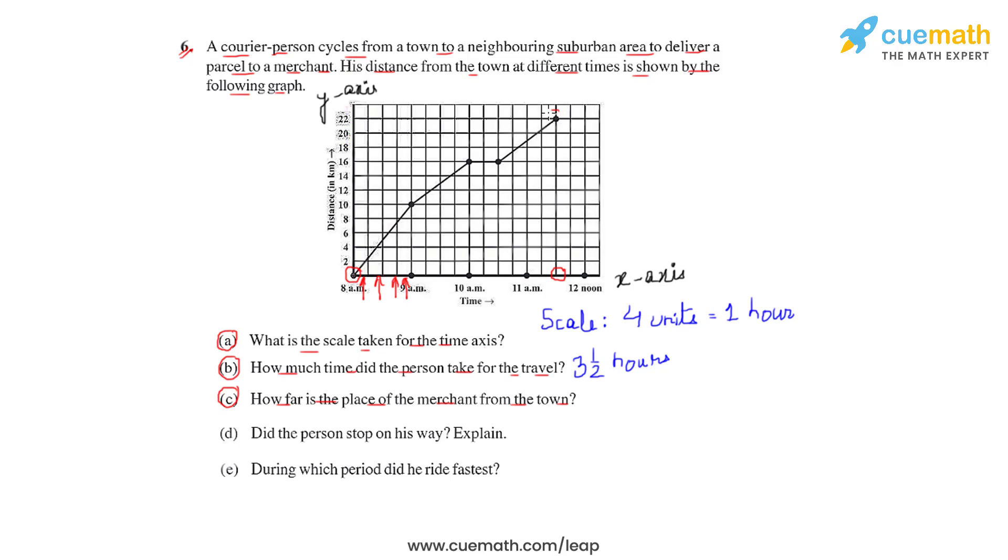The final distance on the vertical axis would be given by this point. This point marks 22 kilometers on y-axis, which means that the person traveled for 22 kilometers to reach the merchant from his town.